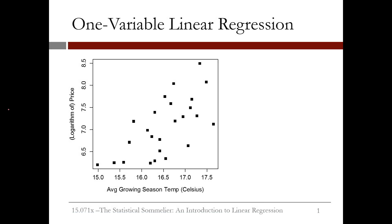Let's discuss the method Aschenfelter used to build his model: linear regression. We'll start with one-variable linear regression, which uses just one independent variable to predict the dependent variable. This figure shows a plot of one of the independent variables, average growing season temperature, and the dependent variable, wine price.